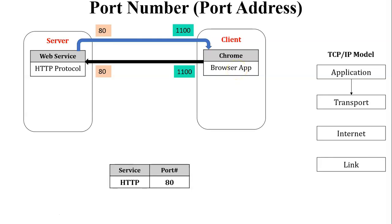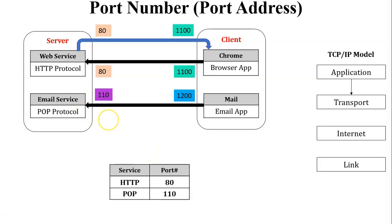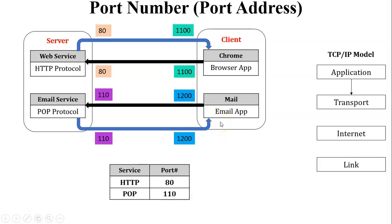Let us take another example. The client wants to send a request for email services from the email application to the server. The email application sends a request to the server side. The server checks the email service request and identifies which port number is used — here POP protocol is used, which is associated with port number 110. So the server receives the client request at port number 110 and sends a reply back. The client receives this reply at its registered application port number. This is how port numbers are used in process-to-process communication in the network.